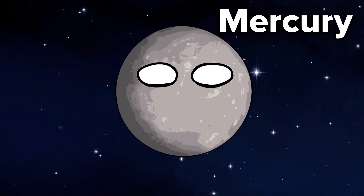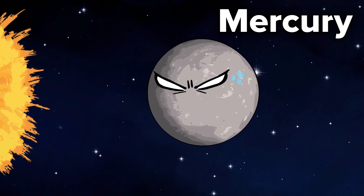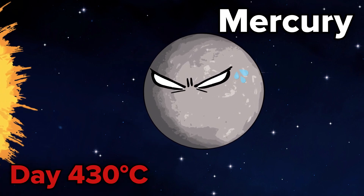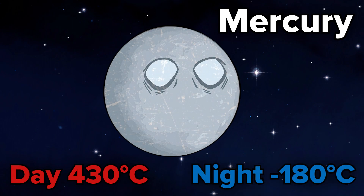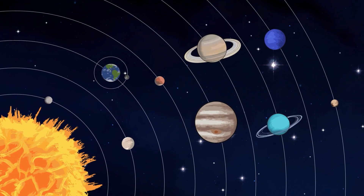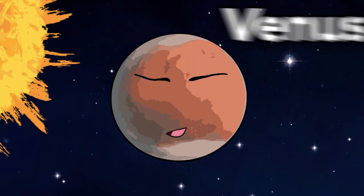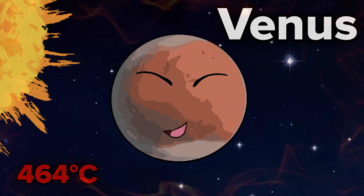Mercury: the temperature on the surface of Mercury during the day is 430 degrees Celsius, and during the night minus 180 degrees Celsius. Venus: the temperature on the surface of Venus is 464 degrees Celsius.